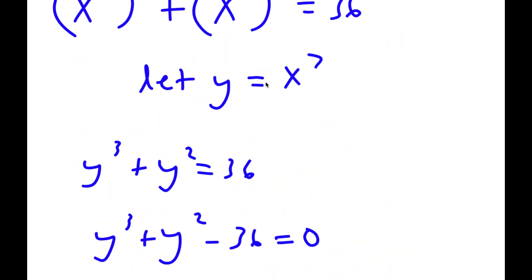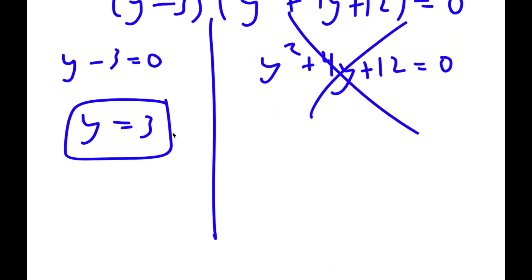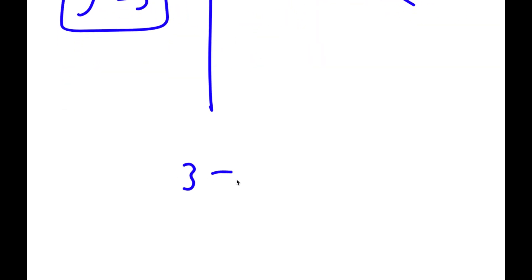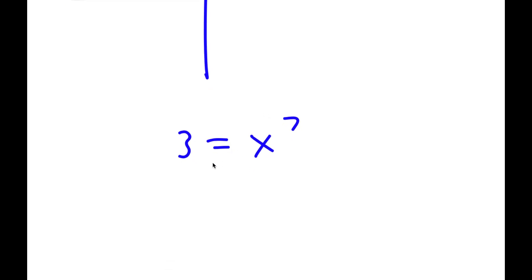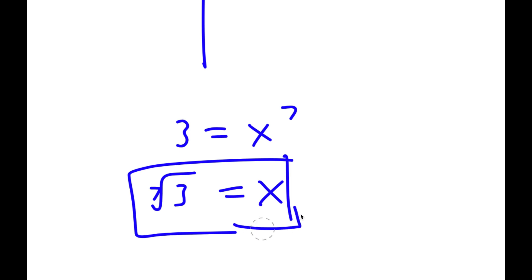Going back, remember how we let y equal x to the power of 7. We know y equals 3, meaning 3 equals x to the power of 7. So if I take the 1/7 power on both sides, I get the 7th root of 3 is equal to x. So this is my answer.